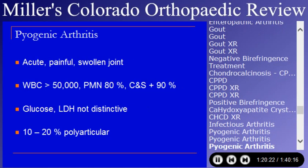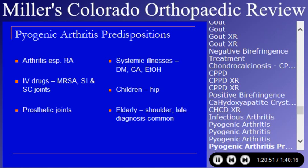Pyogenic arthritis presents as an acute, painful, swollen joint. White blood cell count is usually significantly greater than 50,000 — if less than that, really wonder about the diagnosis. 80% polys; culture and sensitivity is much more likely to be positive than in a septic replaced joint. As many as 10-20% can be polyarticular. Predispositions include rheumatoid patients, IV drug abusers — remember the sacroiliac and sternoclavicular joints, a commonly asked question — and people with systemic illnesses.